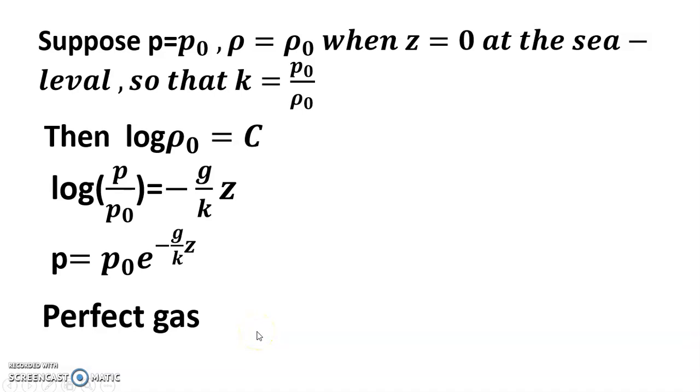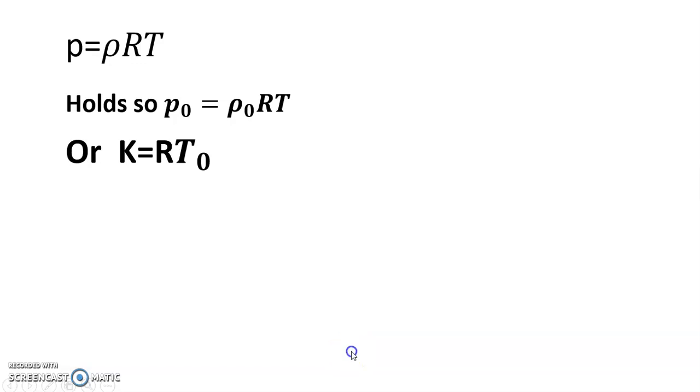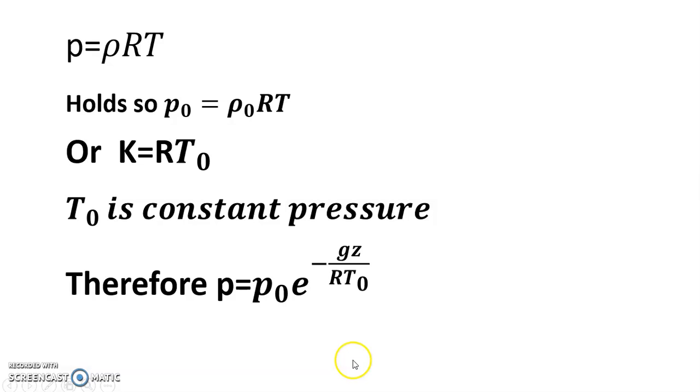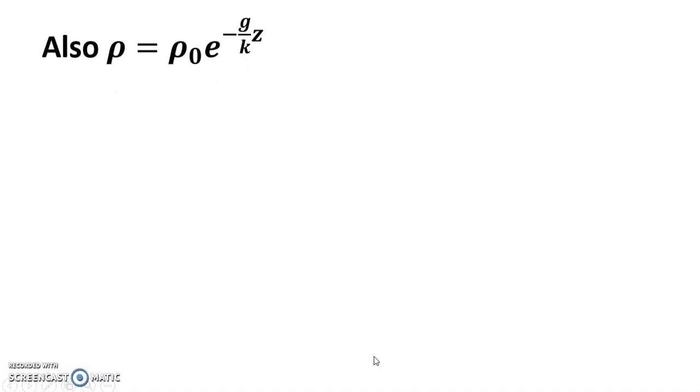Since the atmosphere may be treated as a near-perfect gas, here I consider perfect gas, meaning pV = nRT. For which the equation p = ρRT, so p₀ = ρ₀RT and k = RT, where T₀ is constant pressure throughout the region. Therefore p = p₀e^(gz/RT), and ρ = ρ₀e^(-gz/RT).